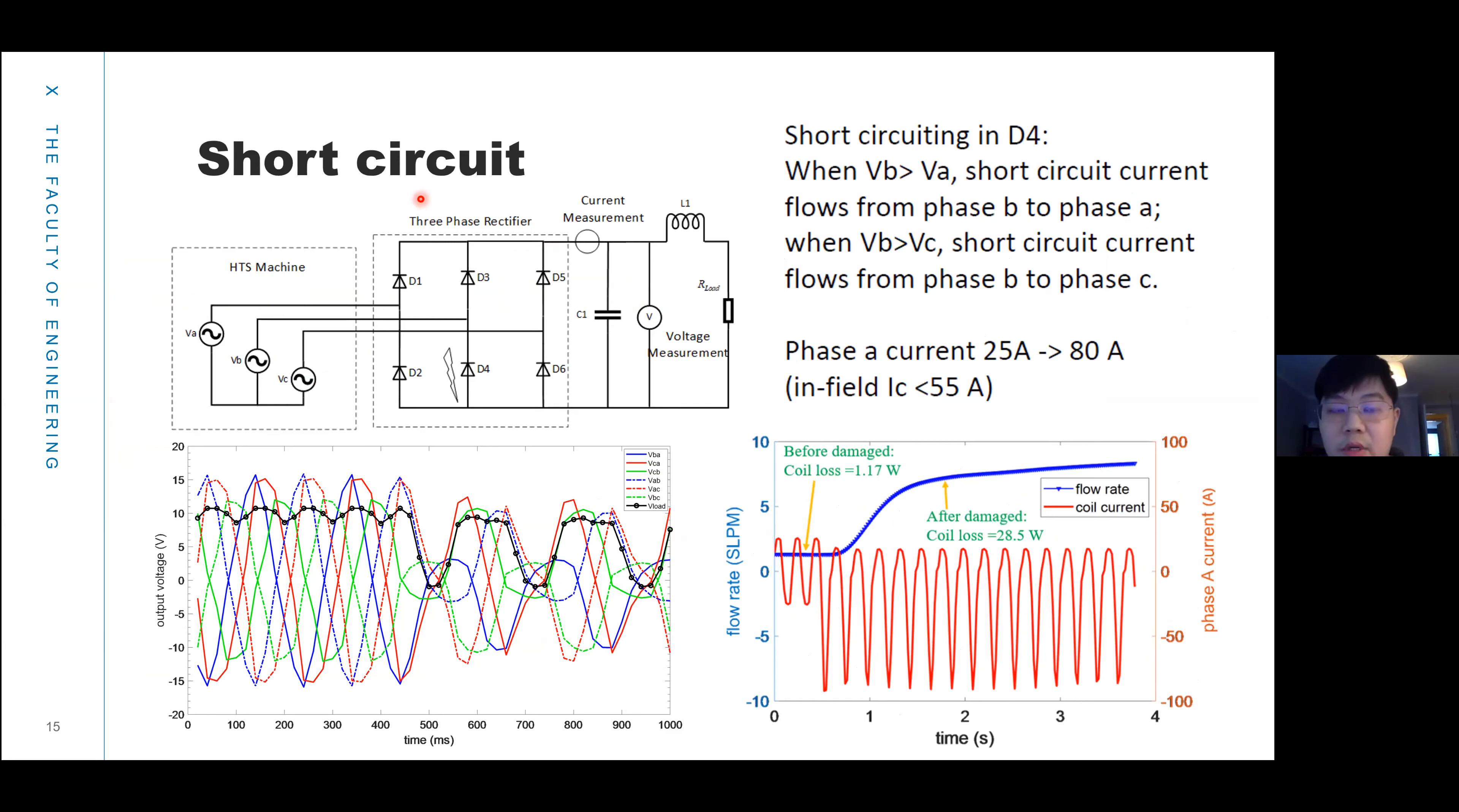We can imagine if there is one diode with short circuit in the rectifier, then the short circuit current will flow from phase B to phase A directly or from phase B to phase C.